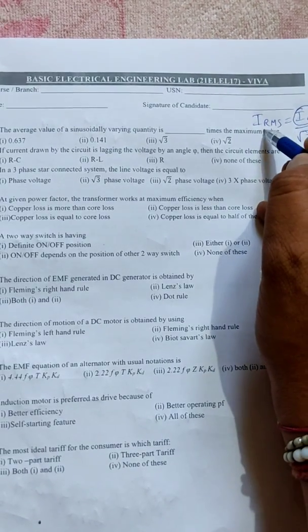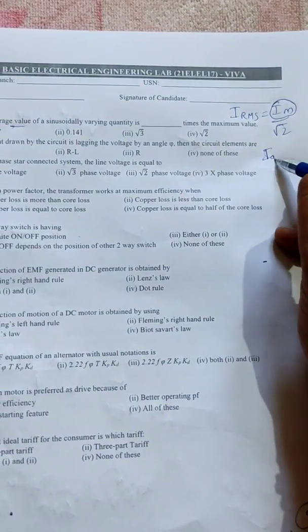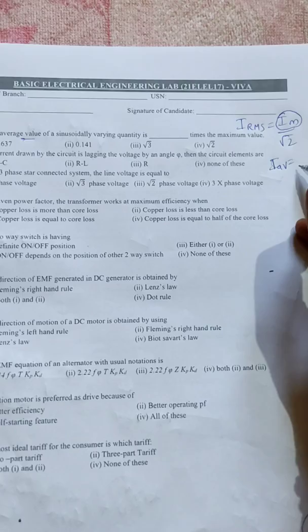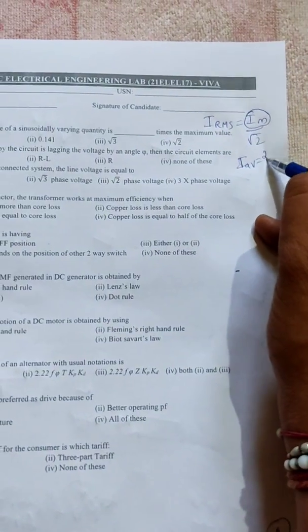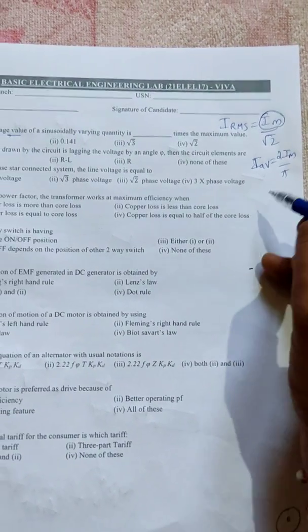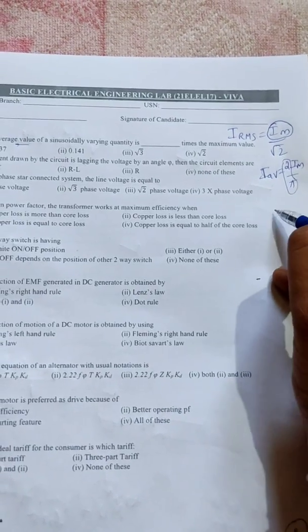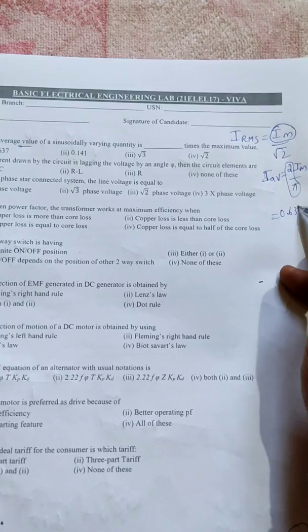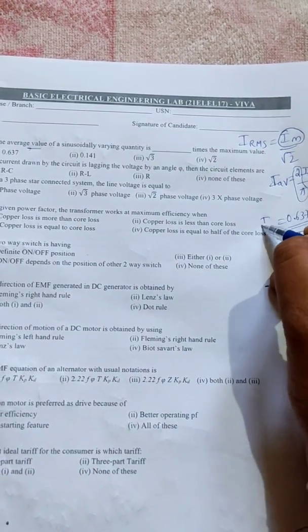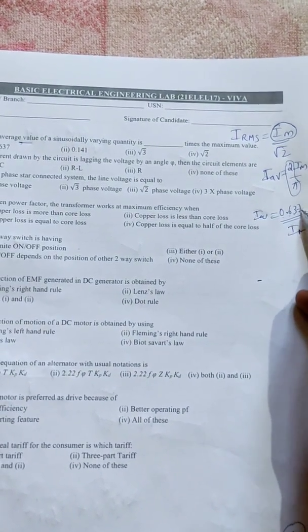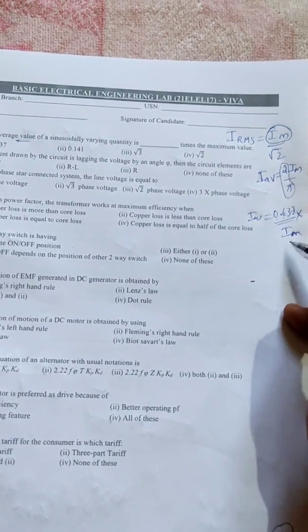This Im value is called maximum value, and this is RMS. Oh sorry, they gave what average value. So please kindly remember the average value formula. The average value of a sinusoidal varying quantity is 2Im by pi. What is 2 by pi? If you do it in calculator you will get 0.637.